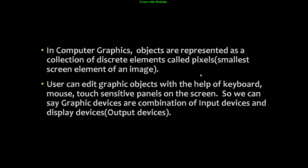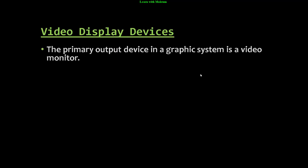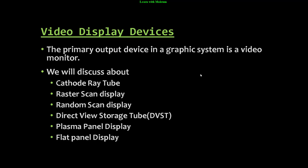So we can say graphic devices are a combination of input devices and display devices. Let's see video display devices. There are different devices available: cathode ray tube, raster scan display, random scan display, direct view storage tube, plasma panel display, and flat panel display. We will be discussing them one by one in individual videos.